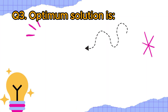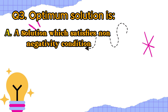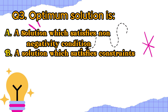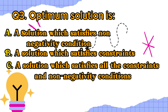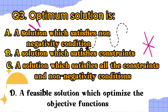Q3. Optimum solution is: A. A solution which satisfies non-negativity condition. B. A solution which satisfies constraints. C. A solution which satisfies all the constraints and non-negativity condition. D. A feasible solution which optimizes the objective function.